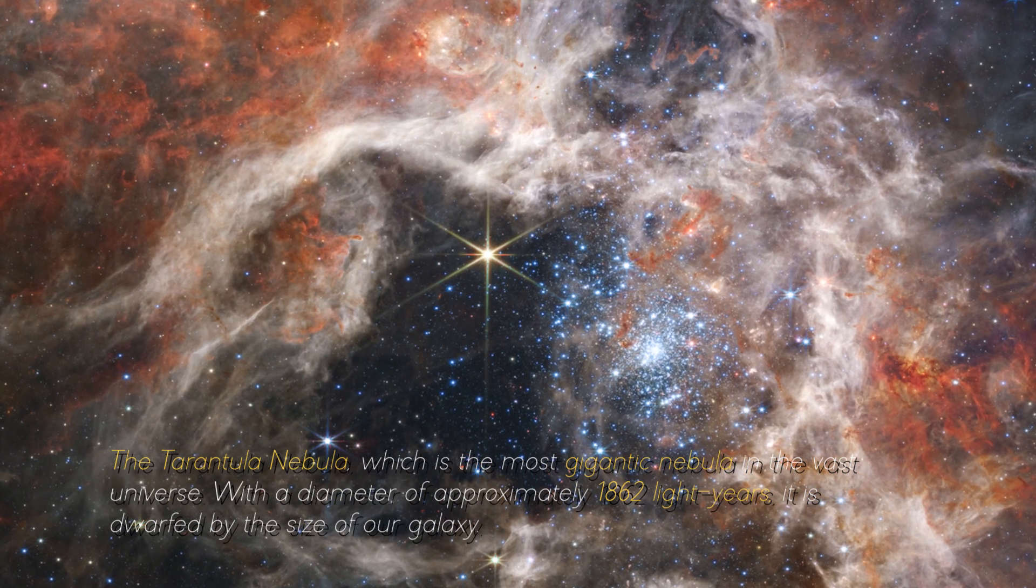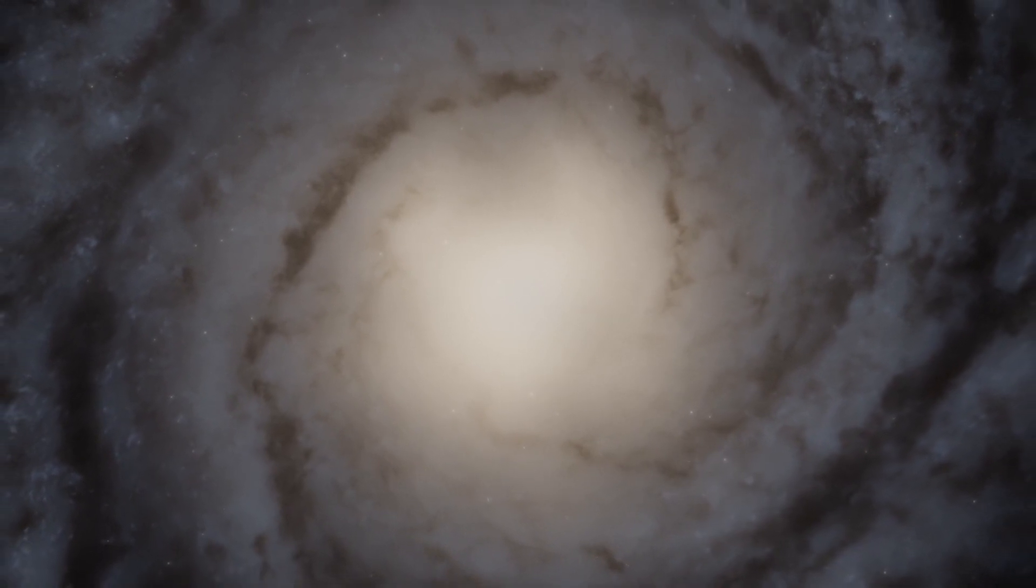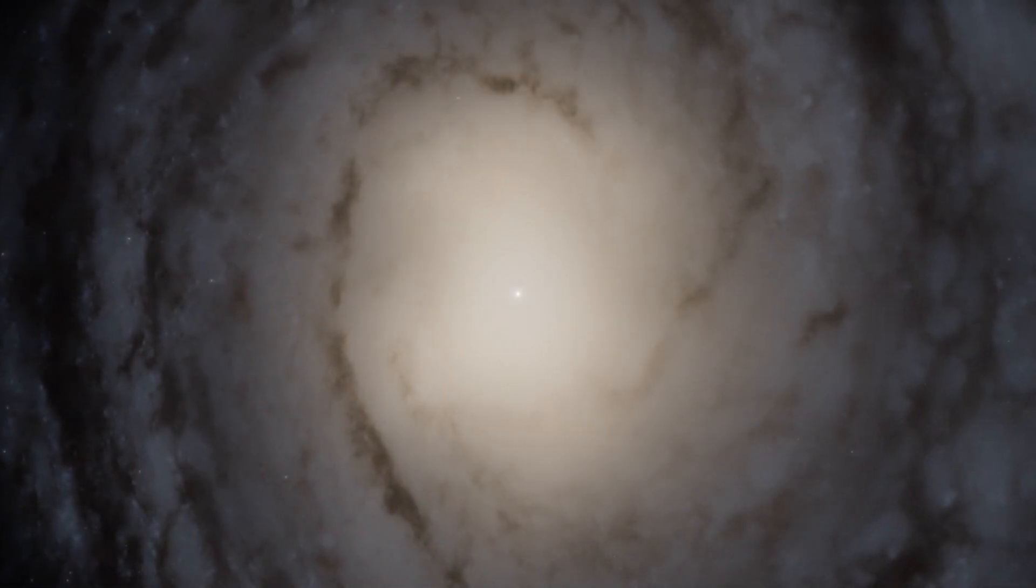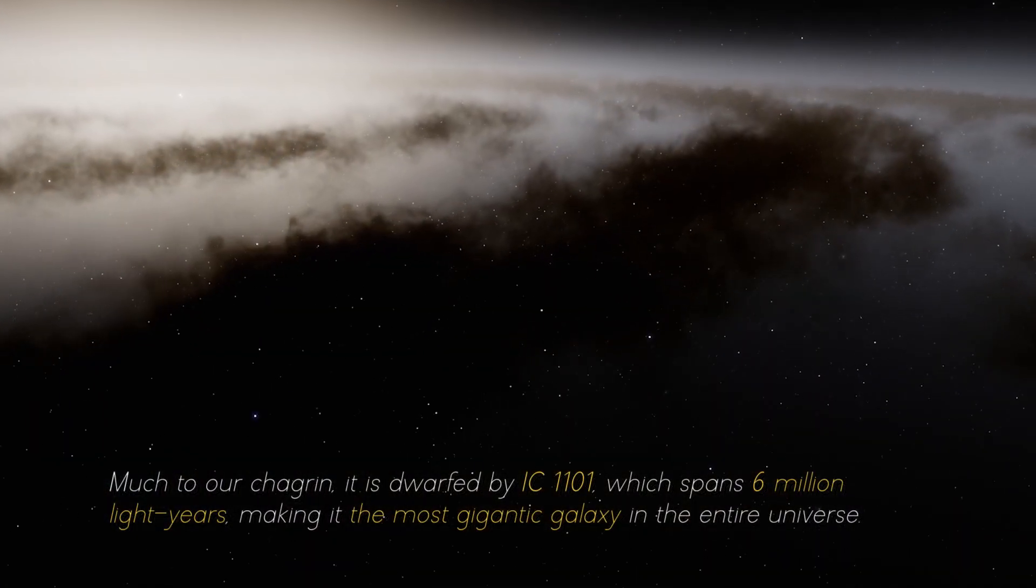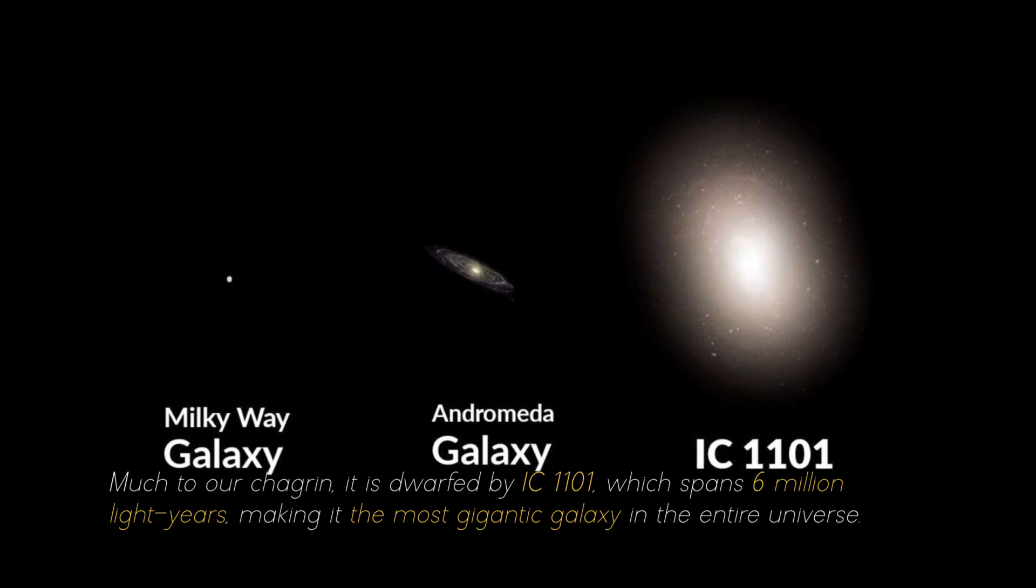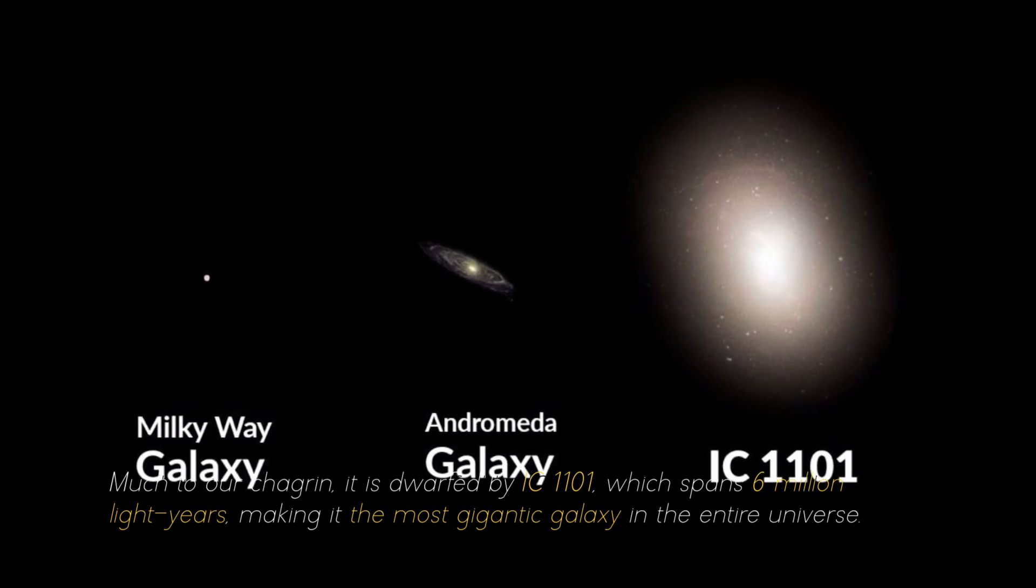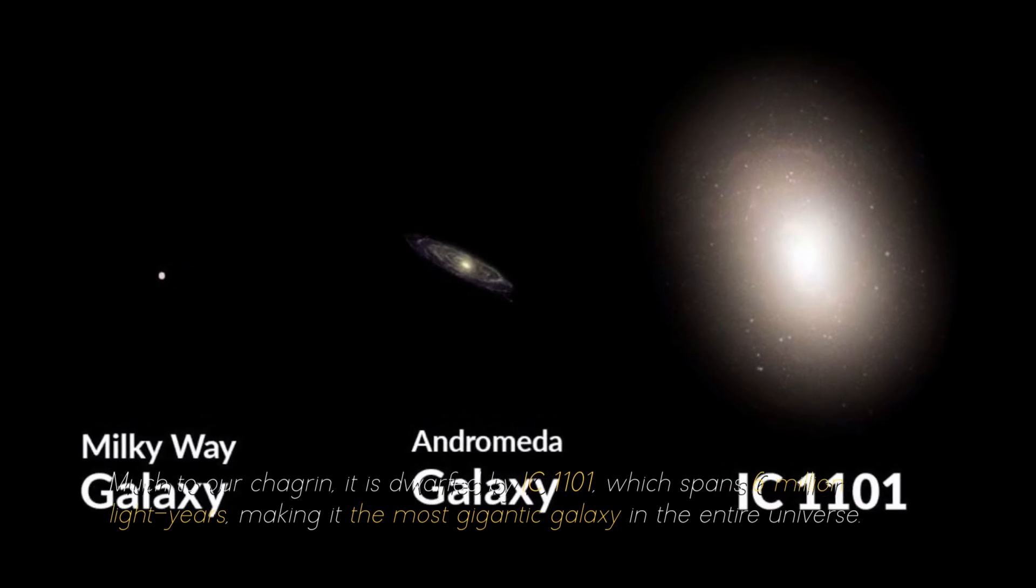It is dwarfed by the size of our galaxy, which spans some 105,700 light years. Much to our chart range, it is dwarfed by the IC 1101, which spans 6 million light years, making it the most gigantic galaxy in the entire universe.